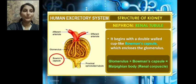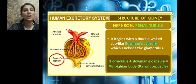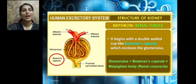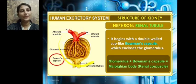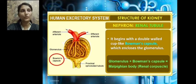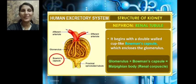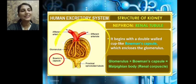The renal tubule begins with a double-walled cup-like structure called the Bowman's capsule, which encloses the glomerulus. The glomerulus together with the Bowman's capsule is called the renal corpuscle, or the Malpighian body. We can see two walls forming this cup-like Bowman's capsule structure.